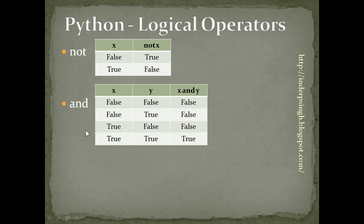The next logical operator is AND. The AND operator needs two operands or data values to work. If both these values are true, then AND results in true. Else, it results in false.